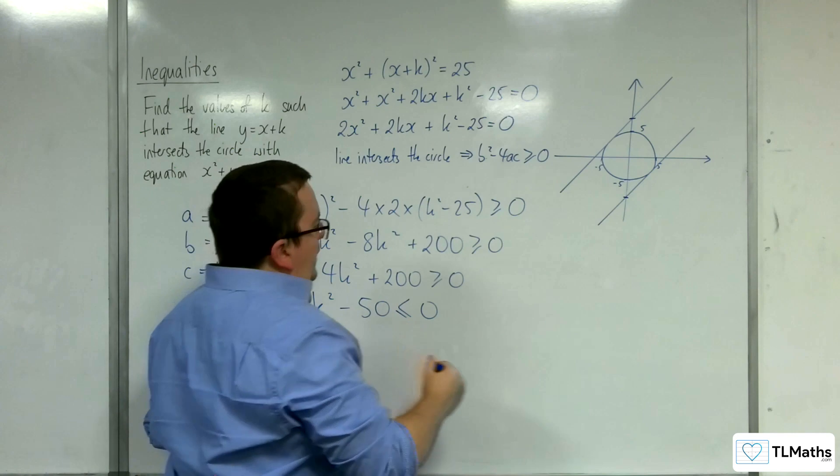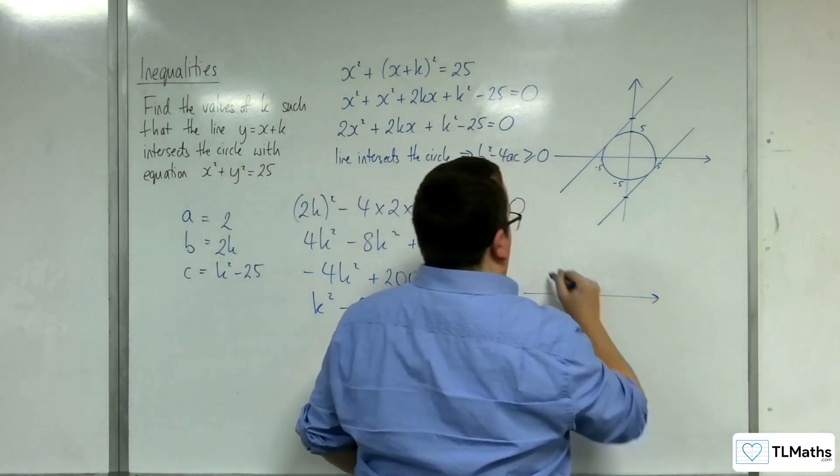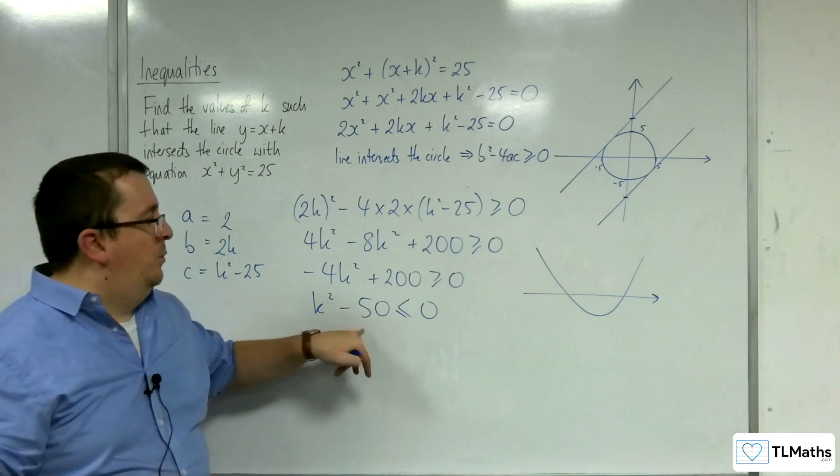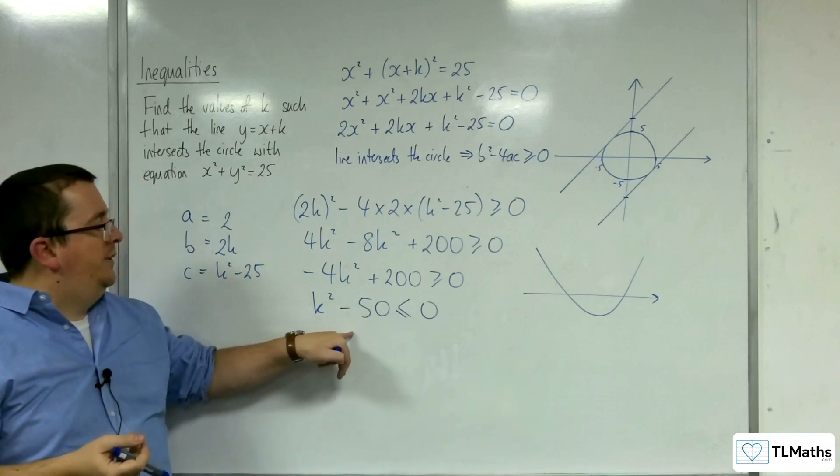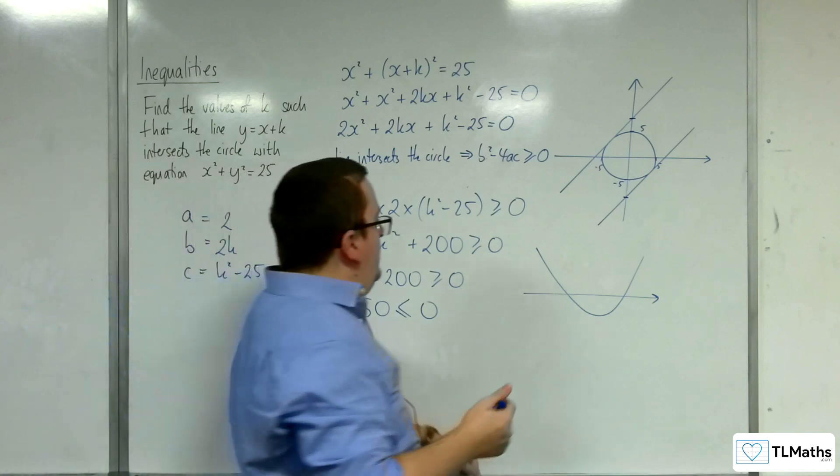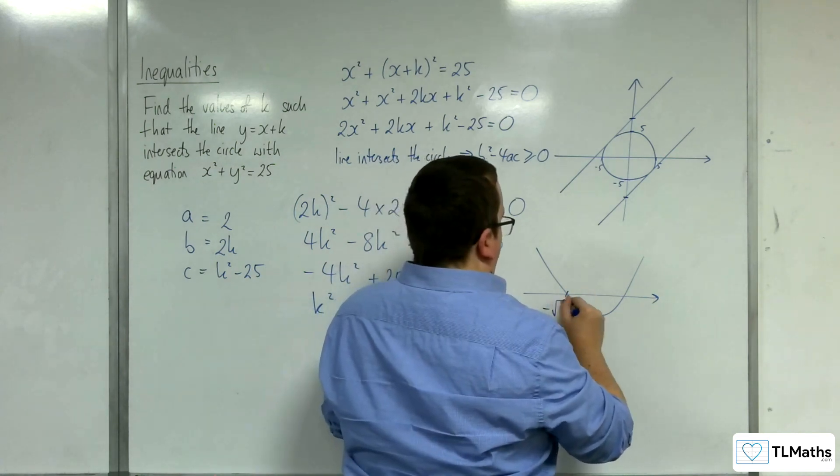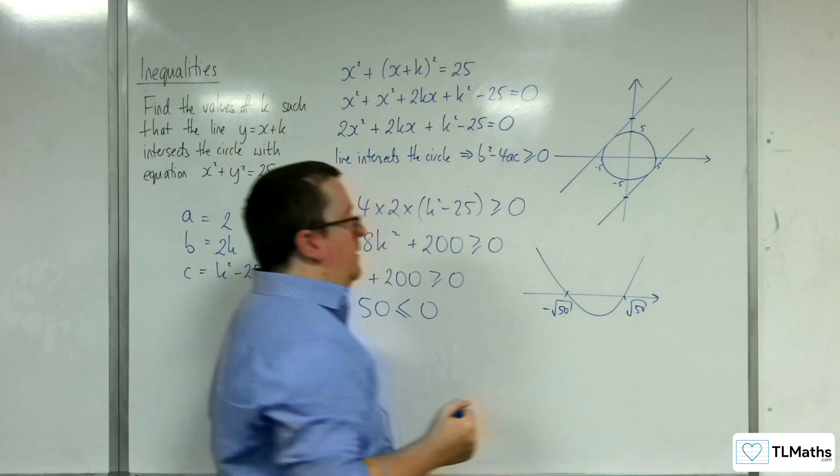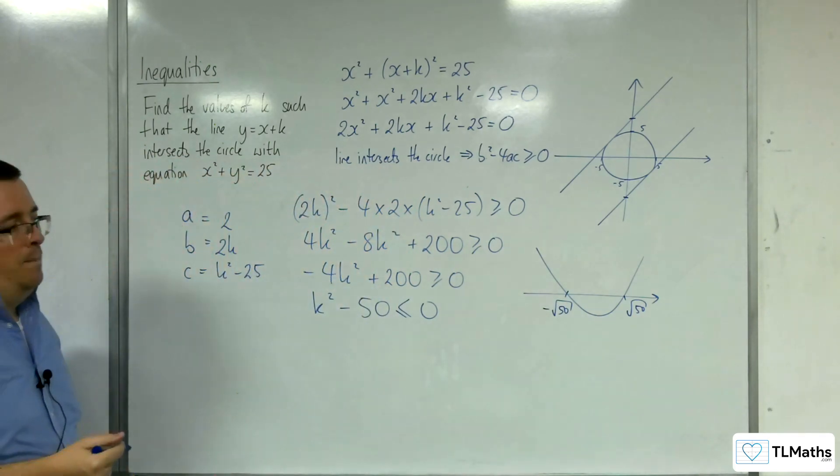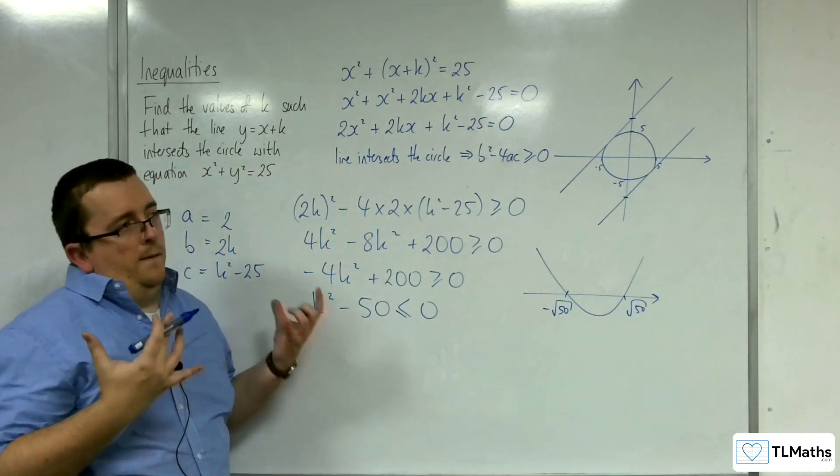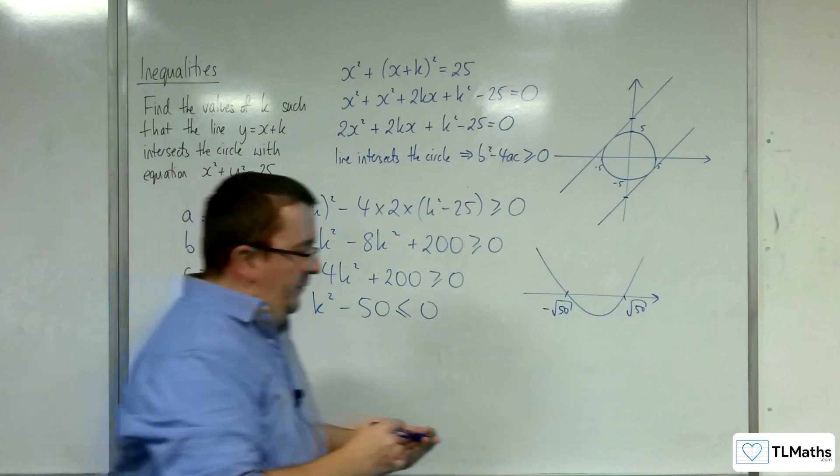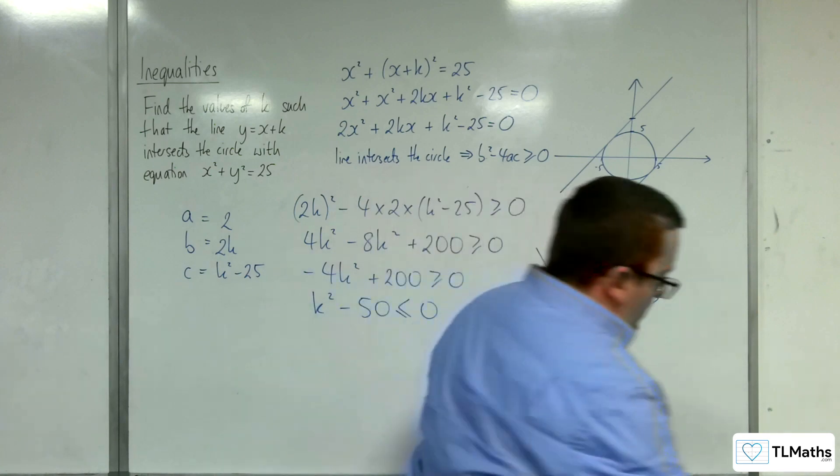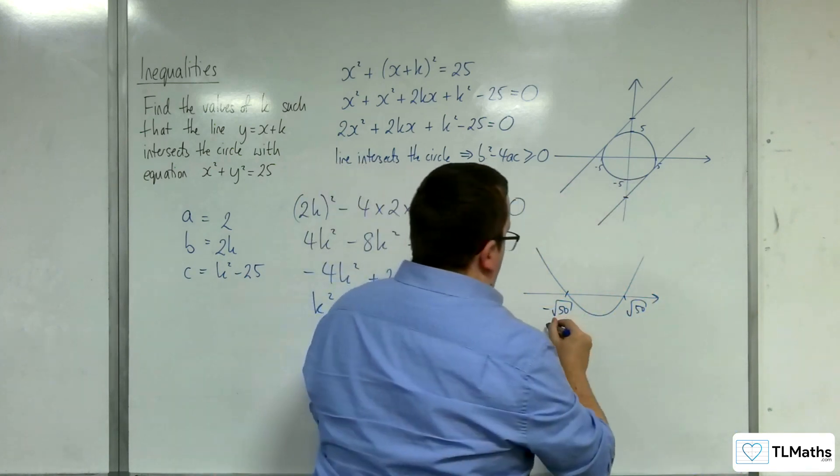So this is going to be a parabola that is intersecting the x-axis, or the k-axis in this case, at minus root 50 and plus root 50. So minus root 50, what's that, minus 5 root 2, so root 50, yeah, 5 root 2 and minus 5 root 2.